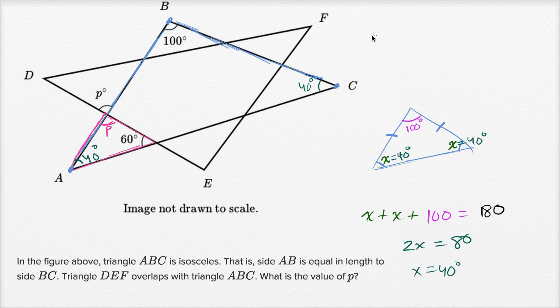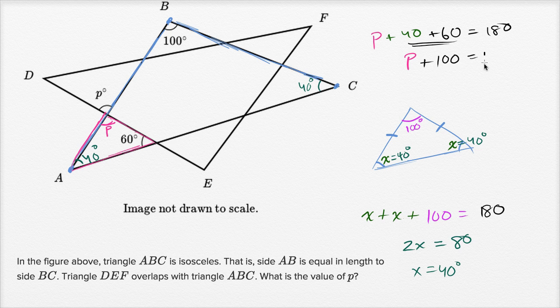And now we see P plus 40 plus 60 is going to add up to 180 degrees. That's the interior angles of this small triangle right over here. Or we could write P plus 100 equals 180, if we add the 40 and the 60. If we subtract 100 from both sides, we get P equals 80 degrees.